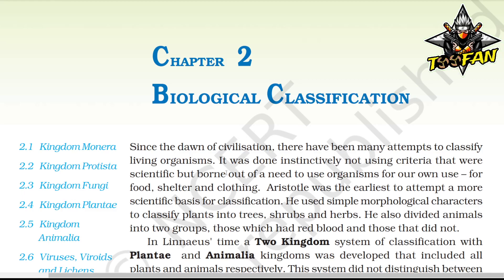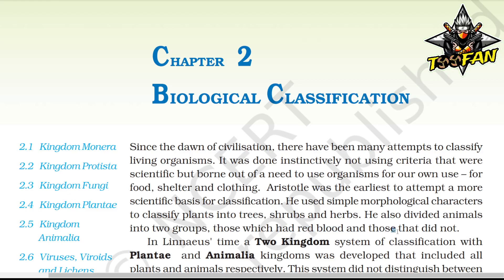Aristotle was the earliest to attempt a more scientific basis for classification. He used simple morphological characters to classify plants into trees, shrubs, and herbs. He also divided animals into two groups: those which had red blood and those which did not.